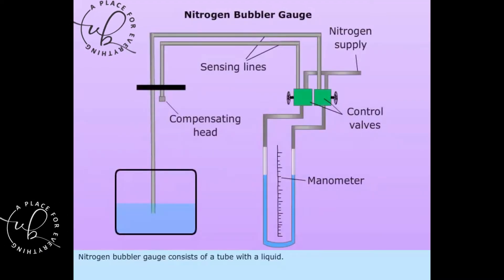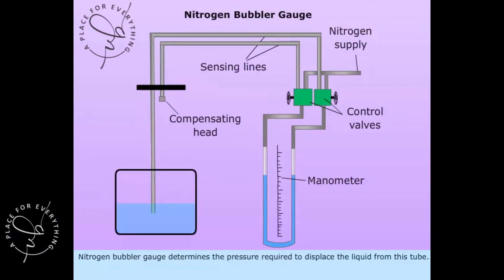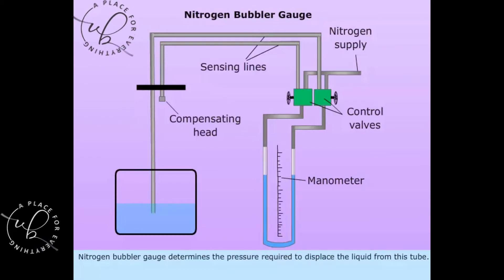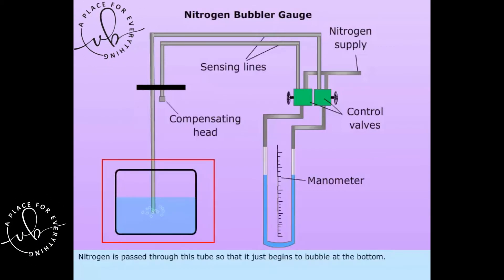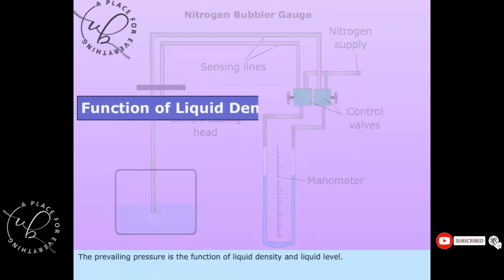Nitrogen bubbler gauge consists of a tube with a liquid. Nitrogen bubbler gauge determines the pressure required to displace the liquid from this tube. Nitrogen is passed through this tube so that it just begins to bubble at the bottom. The prevailing pressure is the function of liquid density and liquid level.